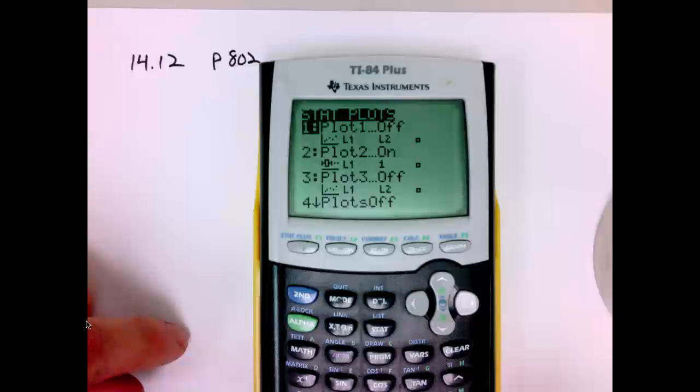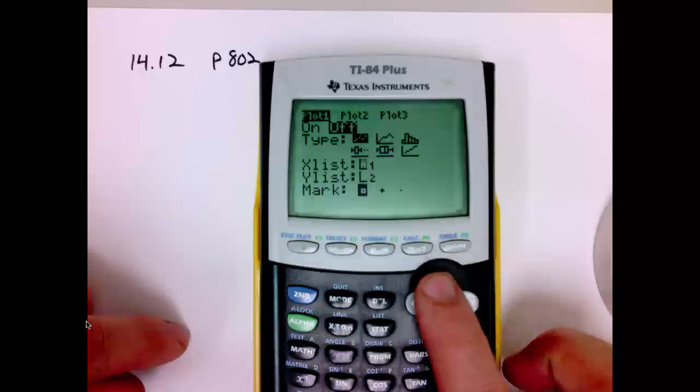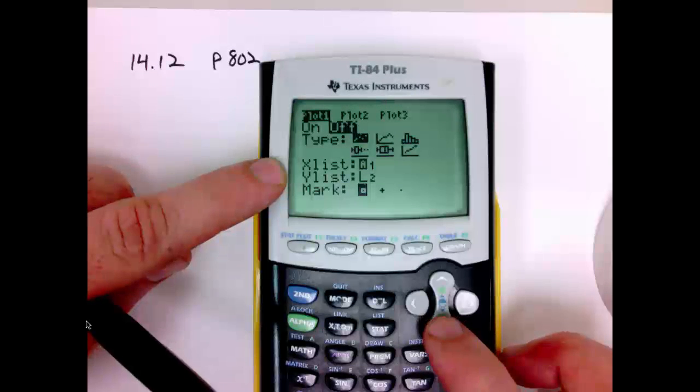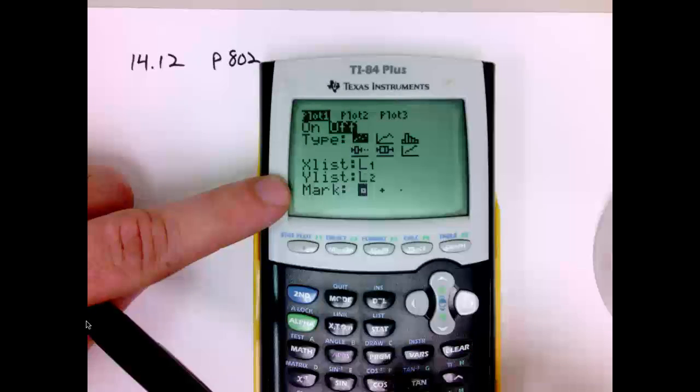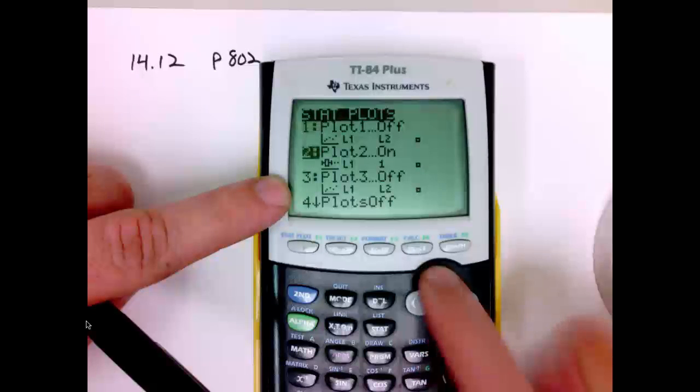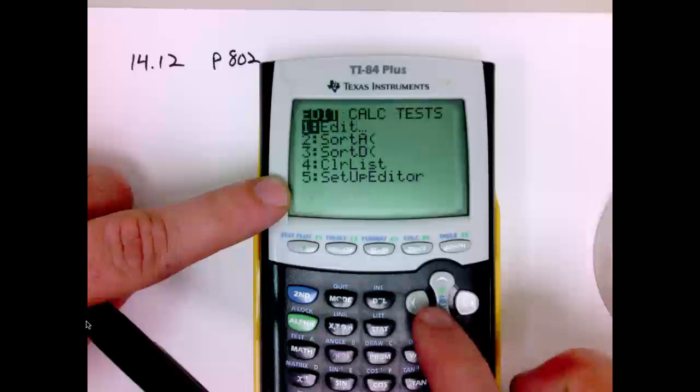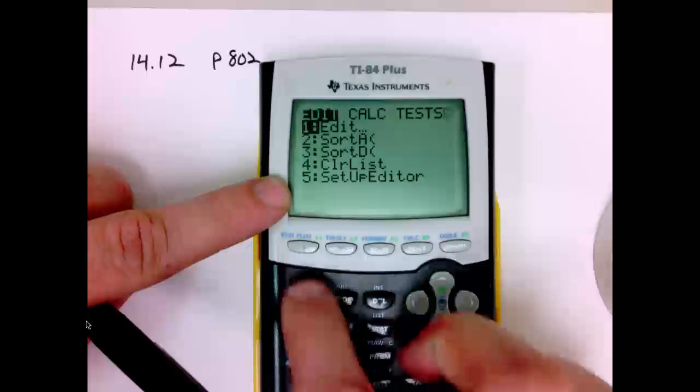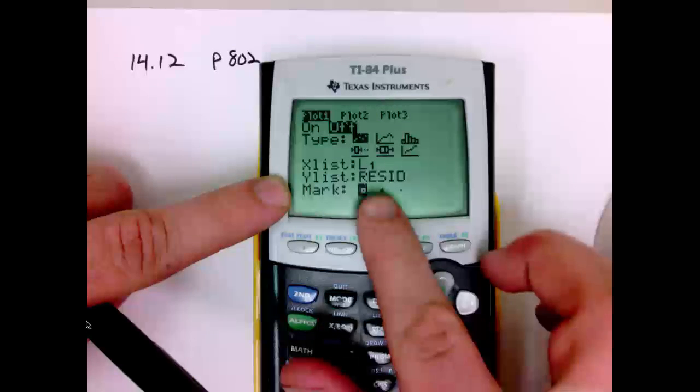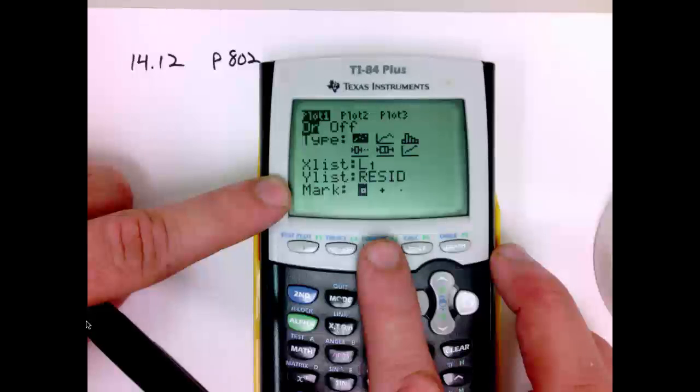A residual plot is simply a scatter plot where the x list is our x data and the y list are the residuals. So in y list I hit second stat and seven for resids. So this is going to give us our residual plot. Zoom nine.